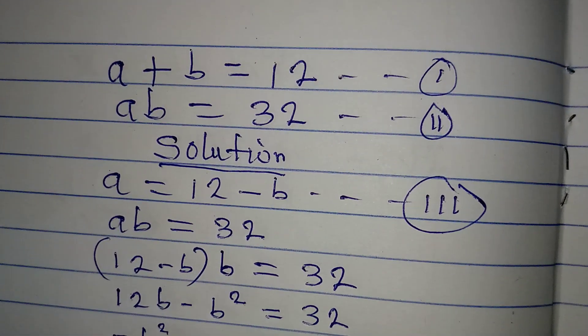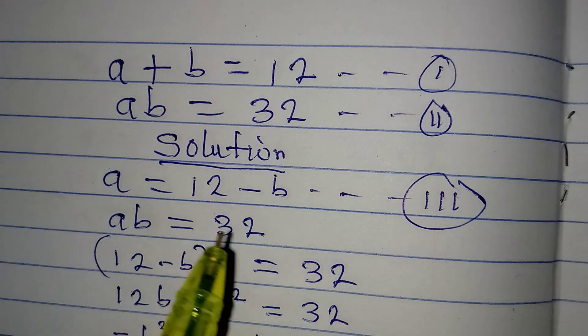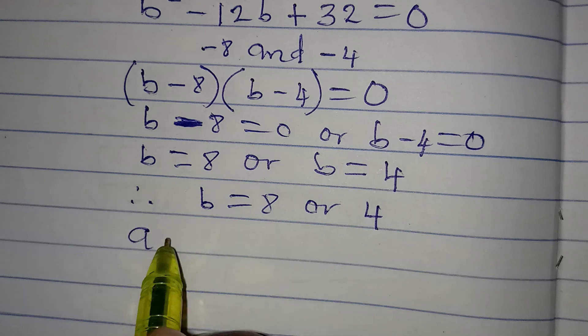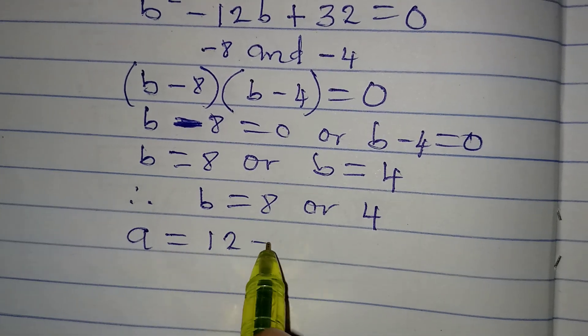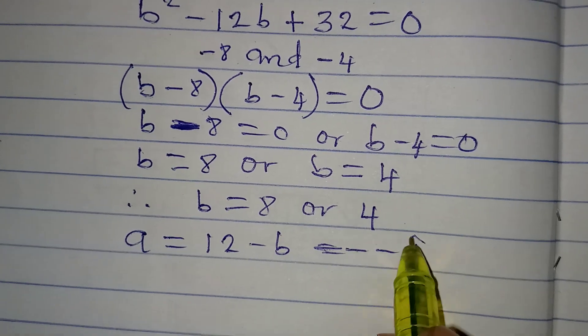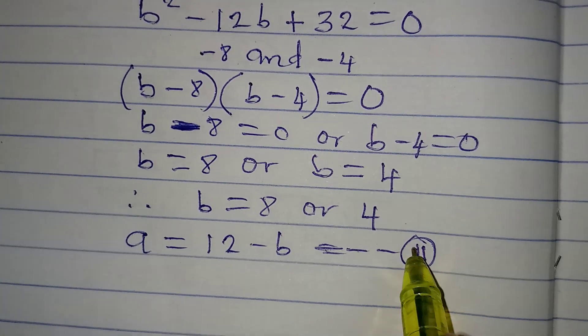First of all, let me write equation 3, which is A equal to 12 minus B. I need to write it here. A is equal to 12 minus B. This is our equation 3: 1, 2, 3.